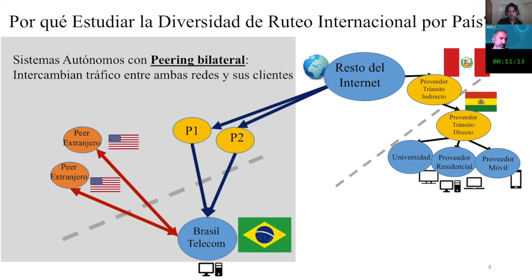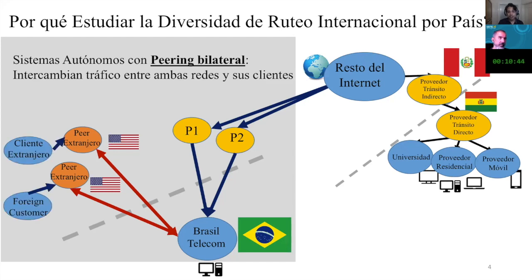We also know that Brazil is big enough and connected enough to IXP infrastructure. On top of the transit connectors connected abroad, it can also establish peering connections, for instance, with networks in the United States. It is through these connections that Brazilian users can get part of their contents from this network — in particular the foreign peering — or from a client of one of these two networks.